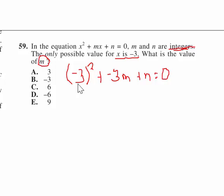Okay, now I'm just going to rewrite this again. Minus 3 squared is 9, positive 9, plus a minus 3m, that will be minus 3m, plus n equals 0. Bad 0 there, but okay.